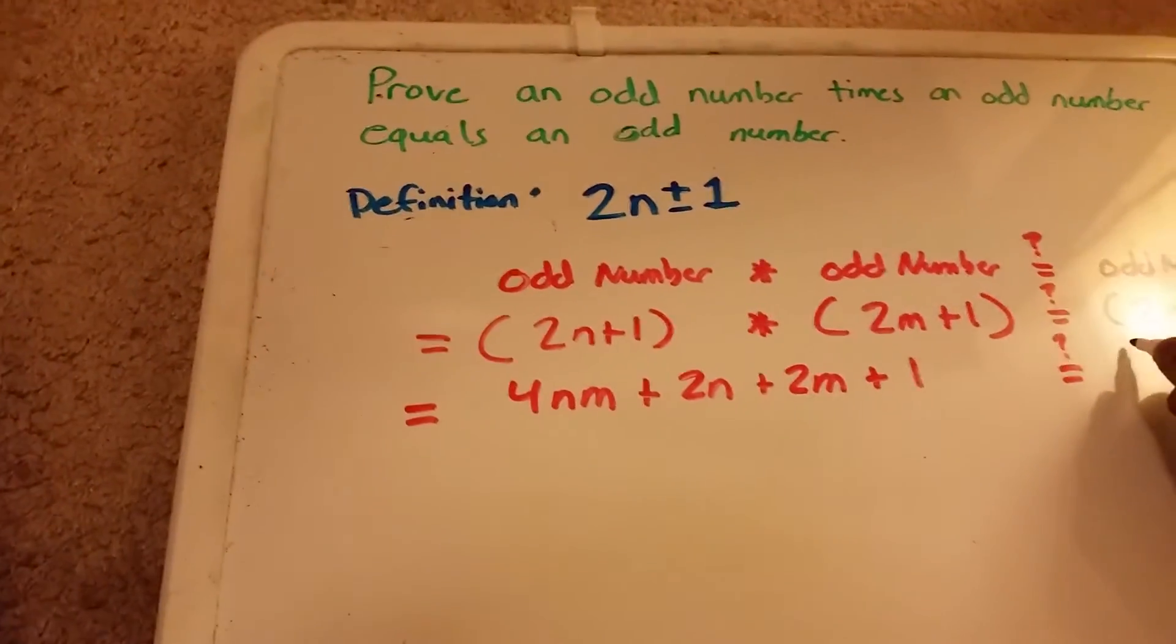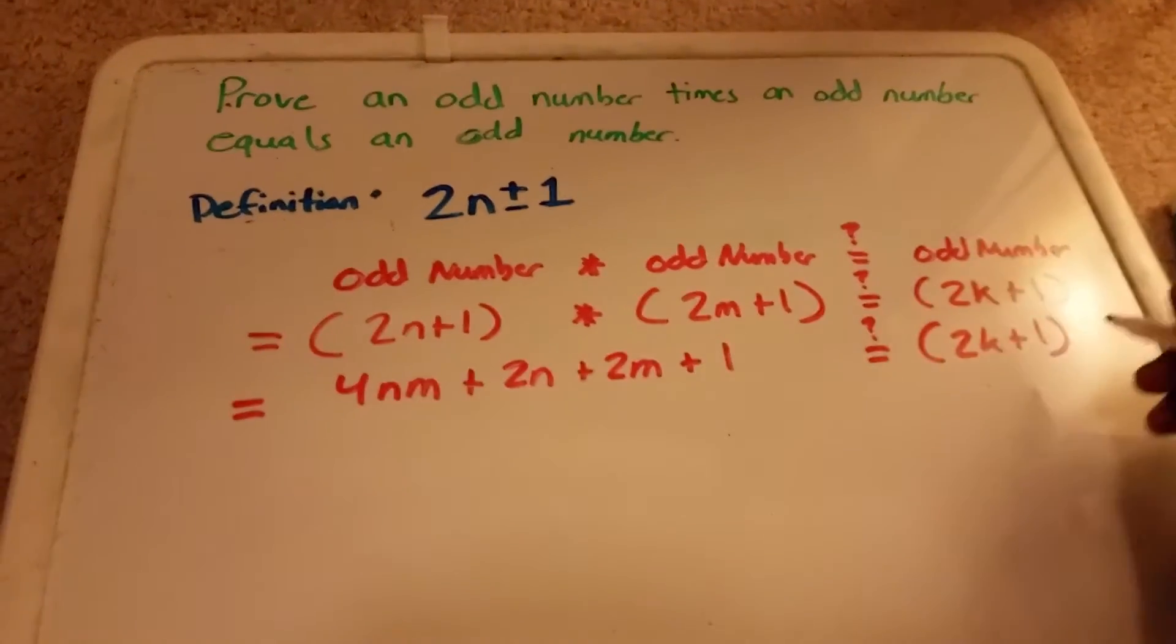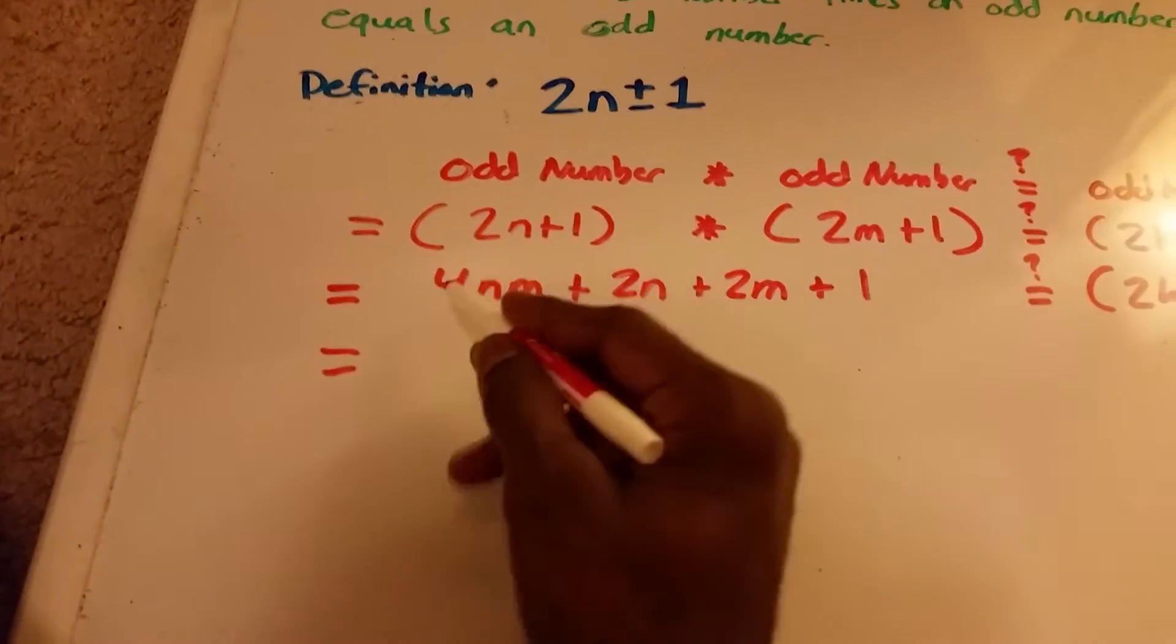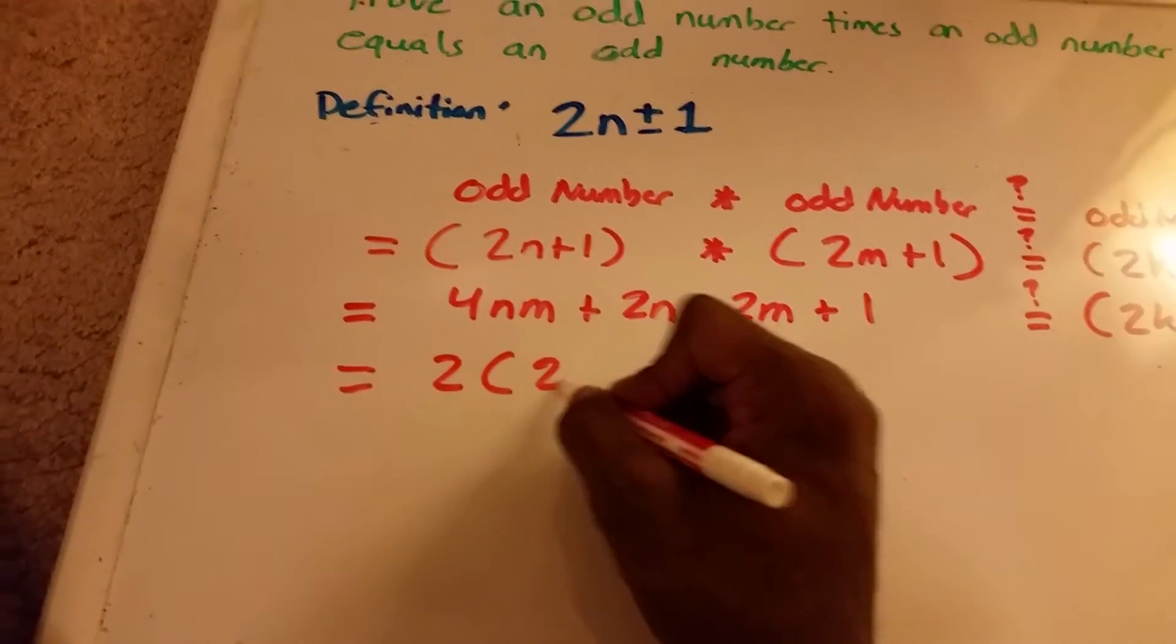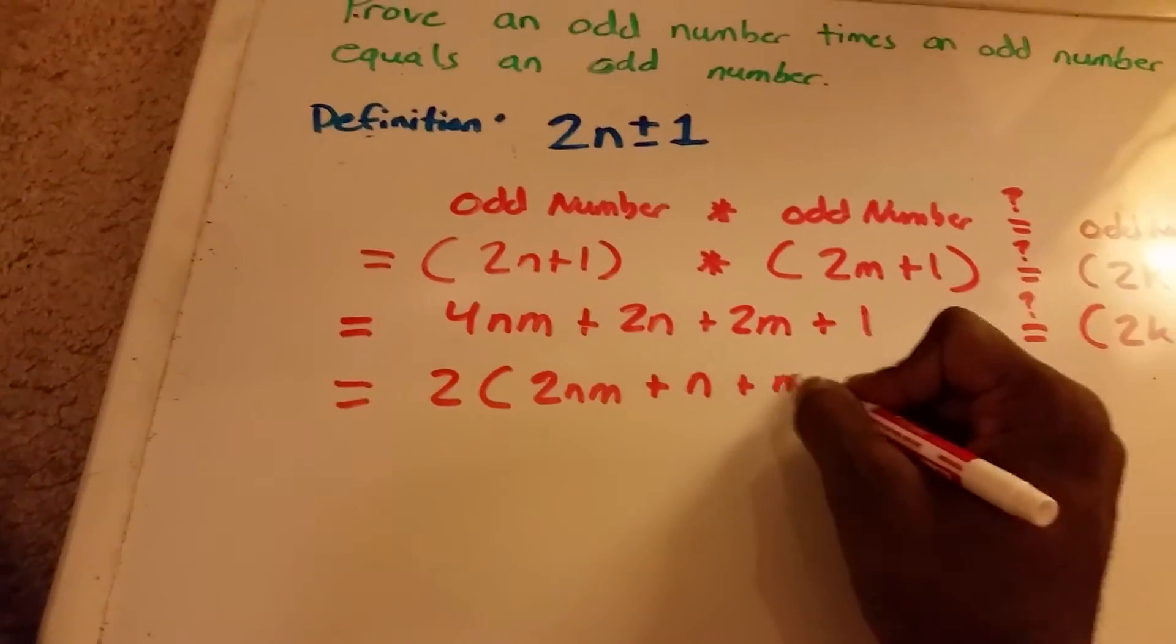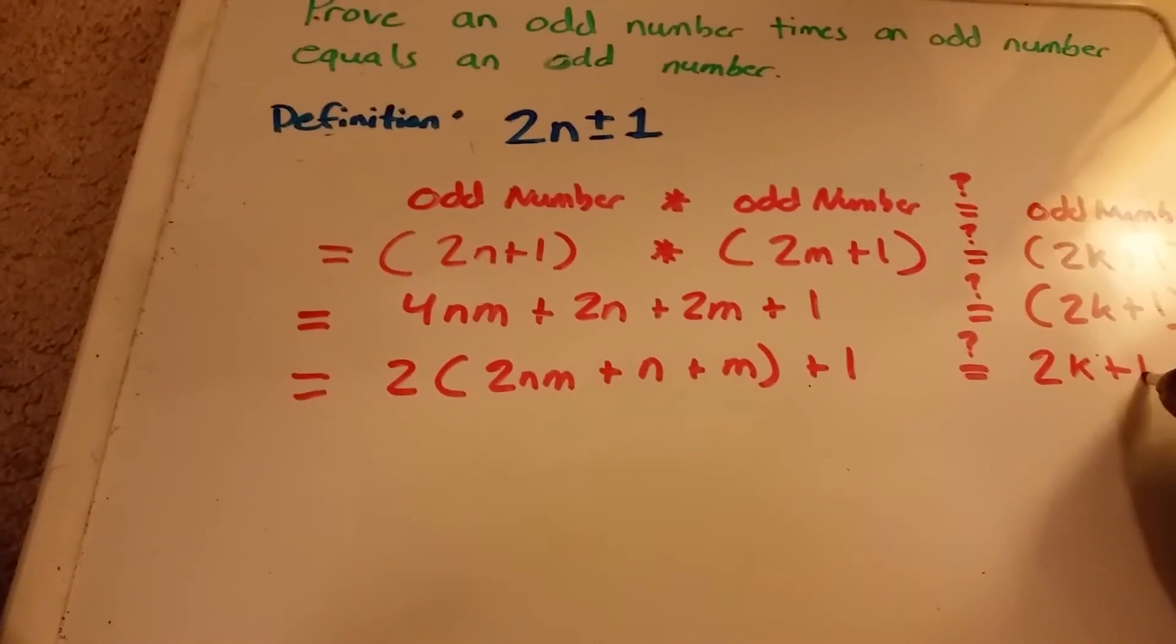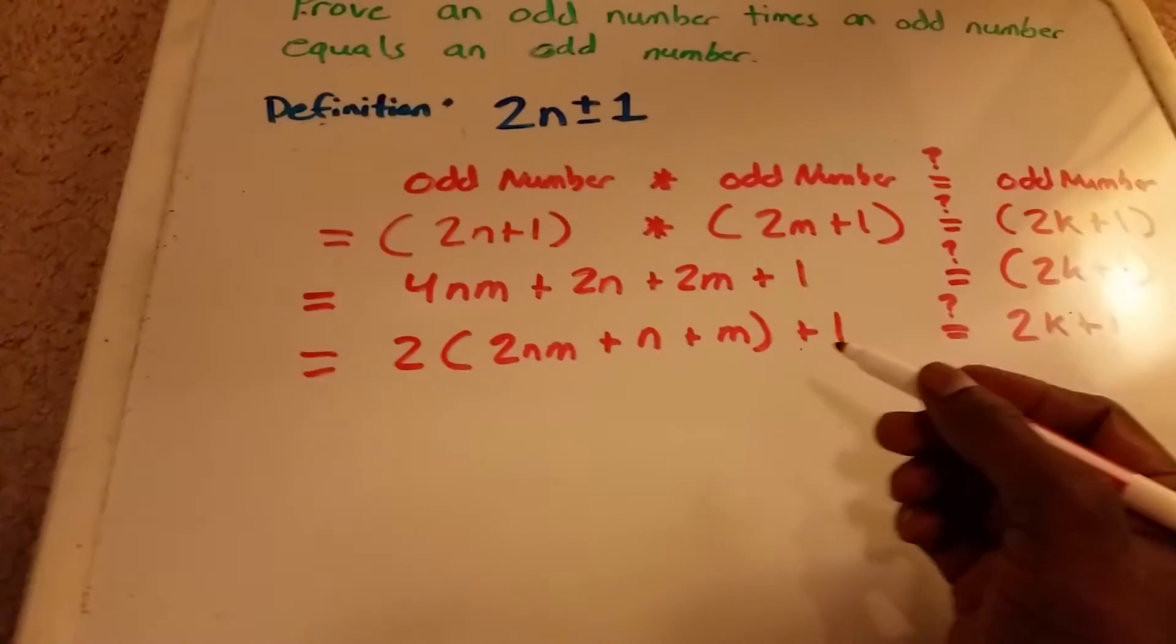And does this look like or equal 2k plus 1? So it's looking like it's getting there. So let's try to get it in that form. We'll pull out a 2 here. So we get 2 times 2n times m plus n plus m plus 1. And does that look like 2k plus 1? Almost. But to actually see it...